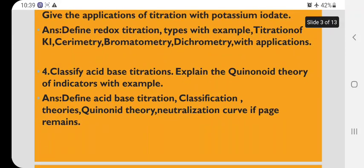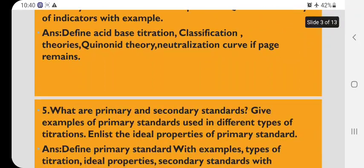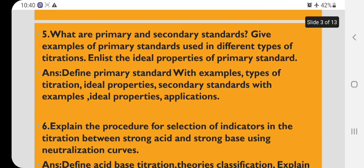Classify acid-base titration. Explain the quinoid theory of indicators. Basic question. Practice this. What are primary and secondary standards? Give examples of primary standards used in different types of titrations. And you have to enlist some of the properties of this primary standard.